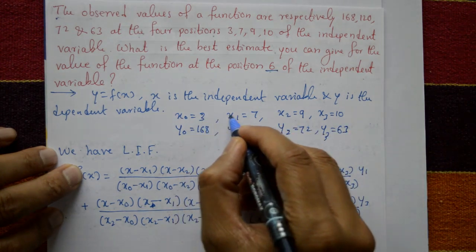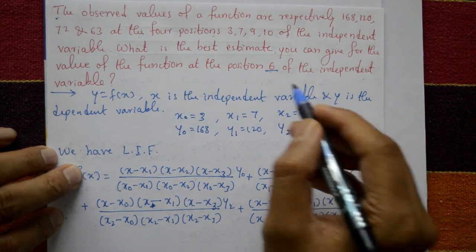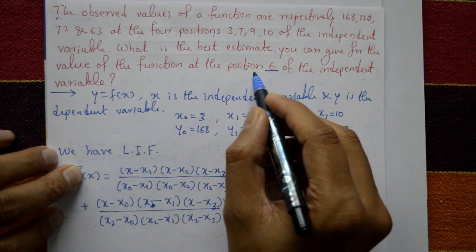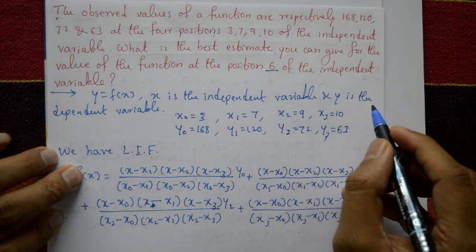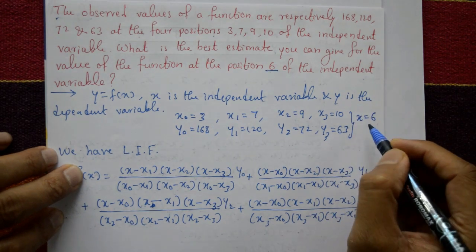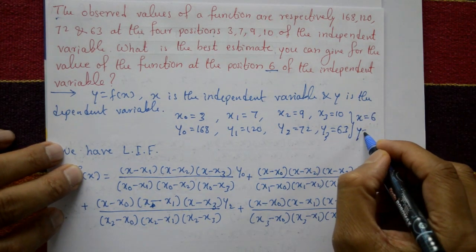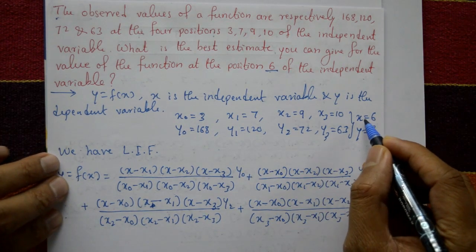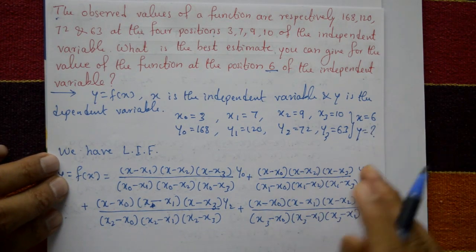These are independent and these are dependent variables. Now the value of the function at position 6 — position 6 means x is given, x value is 6. Then find what is the y value, the dependent variable. Independent variable is given as 6.